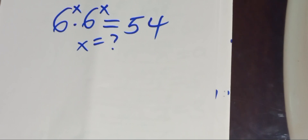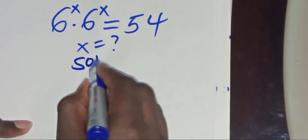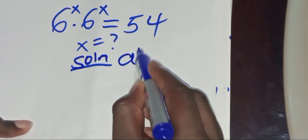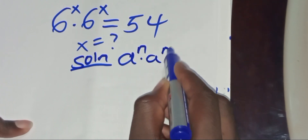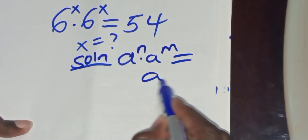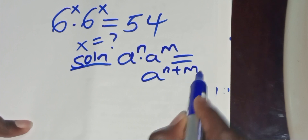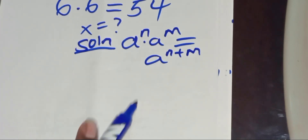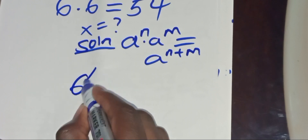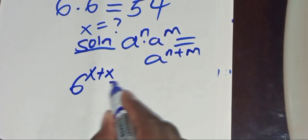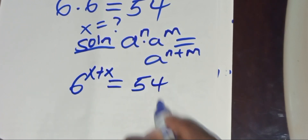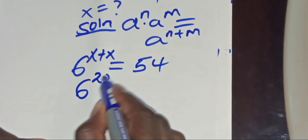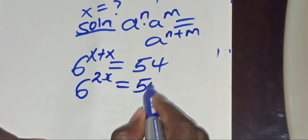For the solution, we have that 6 to the power x multiplied by 6 to the power x is in the form of a^n multiplied by a^m, which equals a^(n+m). Applying this property, we get 6 raised to the power x plus x, which equals 54. So this is the same thing as 6 raised to the power 2x, equal to 54.